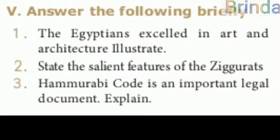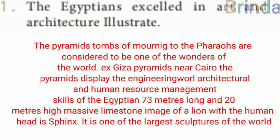Answer the following briefly. First: the Egyptians excelled in art and architecture — illustrate. The pyramids, tombs of the pharaohs, are considered to be one of the wonders of the world — for example, the Giza pyramids near Cairo. The pyramids display the engineering, architectural, and human resource management skills of the Egyptians. The Sphinx, 73 meters long and 20 meters high, is a massive limestone image of a lion with a human head and is one of the largest sculptures in the world.